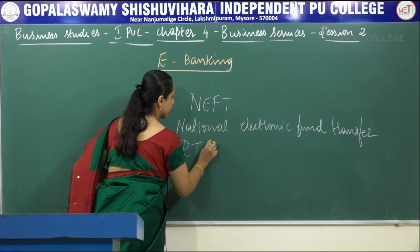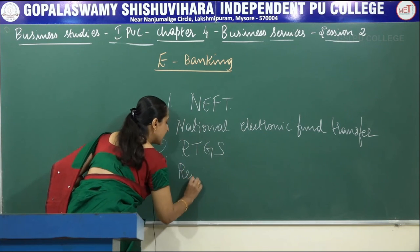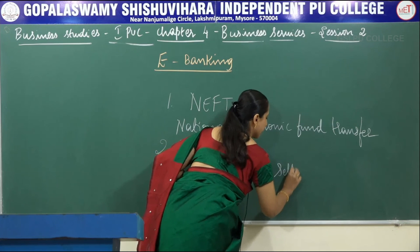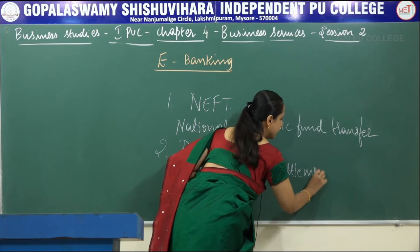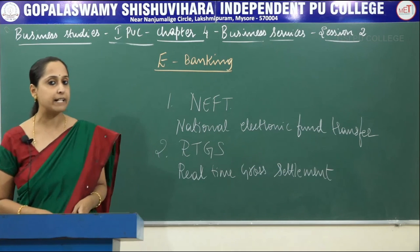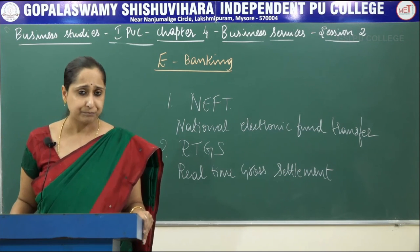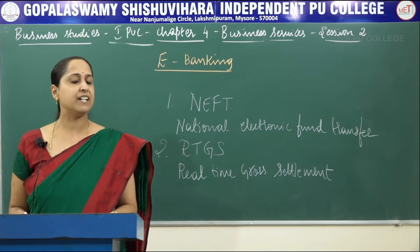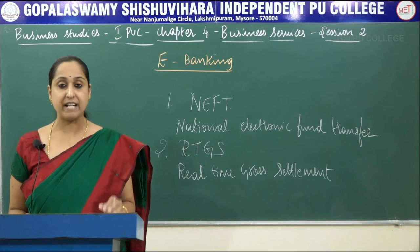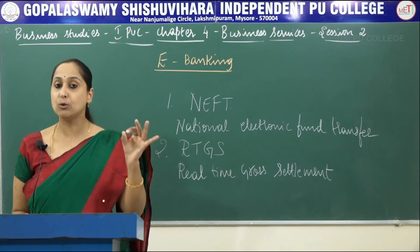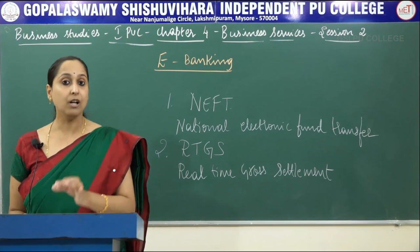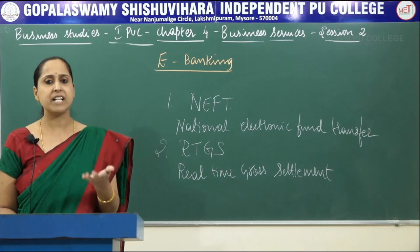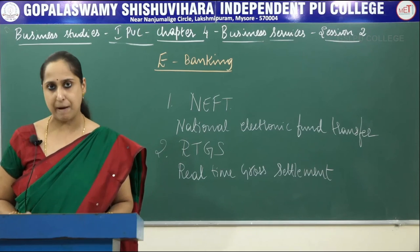The second form of electronic fund transfer is RTGS — Real-Time Gross Settlement. With RTGS, funds are transferred immediately in real-time, and the transaction is completed within a few minutes. So money moves from one account to another very quickly. RTGS is comparatively more expensive than NEFT.